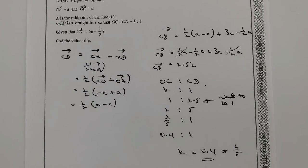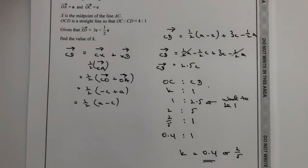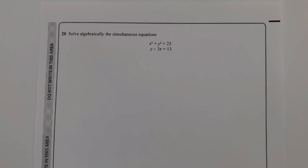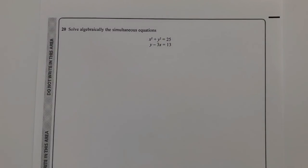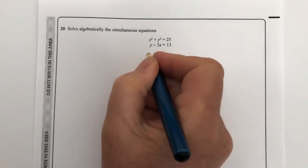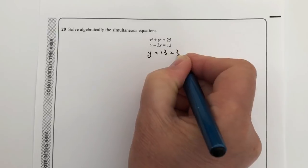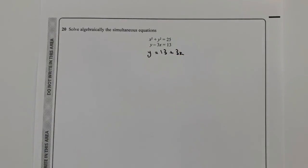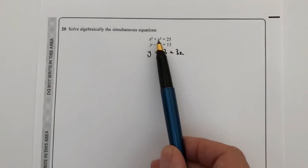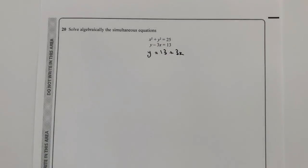Let's move on to question 20, which involves solving a pair of simultaneous equations algebraically — finding values of x and y. We can rearrange to get y equals 13 plus 3x, and then substitute this into the second equation. So rather than writing plus y squared, we write 13 plus 3x squared, and that equals 25.